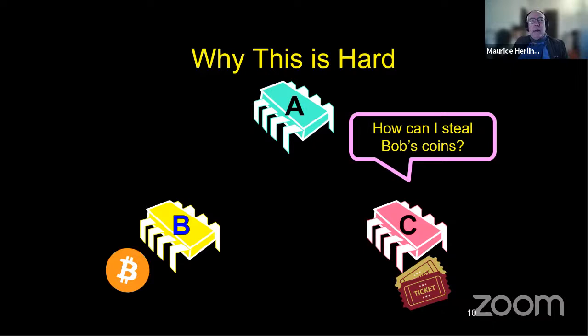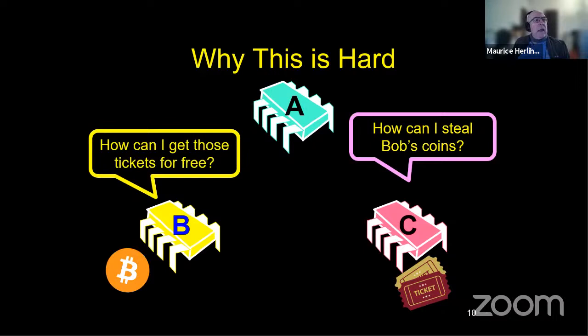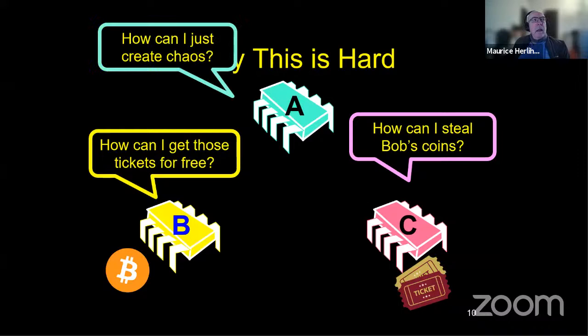It could be that Bob is trying to get the tickets for free. Alice could be faking it. She could just be an agent of chaos. She's trying to create as much disruption as possible. And the goal here is to make sure that everything works, even if the parties, even if everyone, or at least most of the people in the deal are trying to pick one another's pockets.